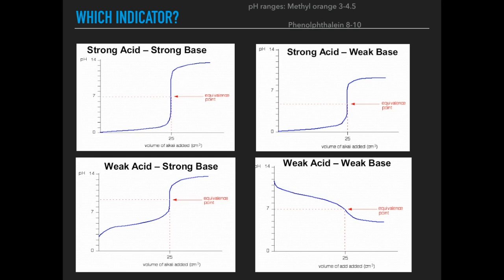And so finally, this is more for the year 13 students. Which indicator should you use? So a little reminder here about these titration curves. We've got the strong acid-strong base, strong acid-weak base, weak acid-strong base, weak acid-weak base. And I always get my students to know about these two indicators: methyl orange and phenolphthalein. Remember this was the one that I chose. The pH ranges I've given are 3 to 4.5 for methyl orange and 8 to 10 for phenolphthalein.